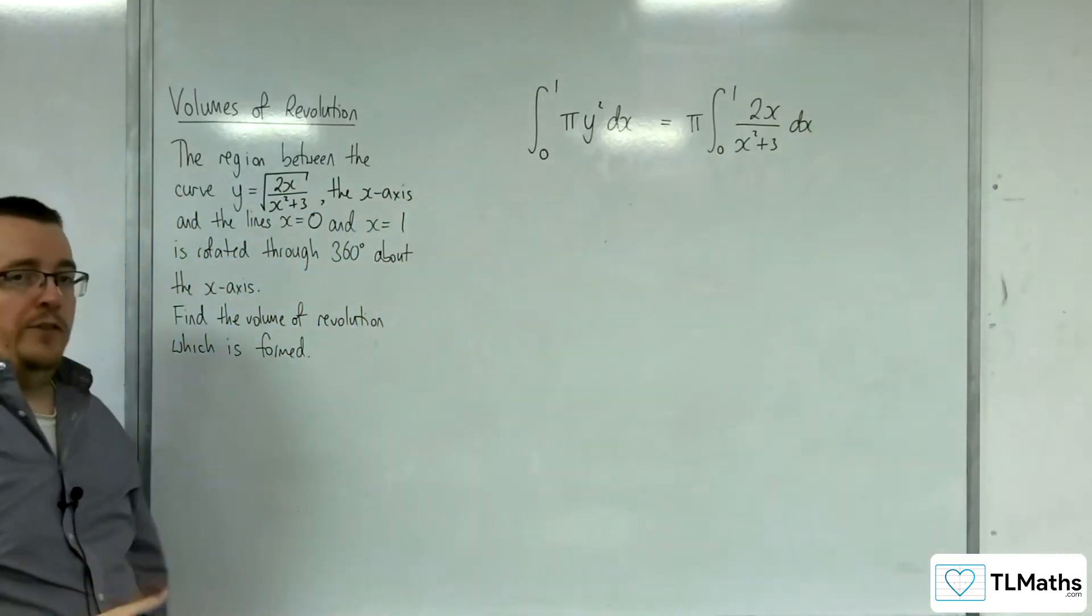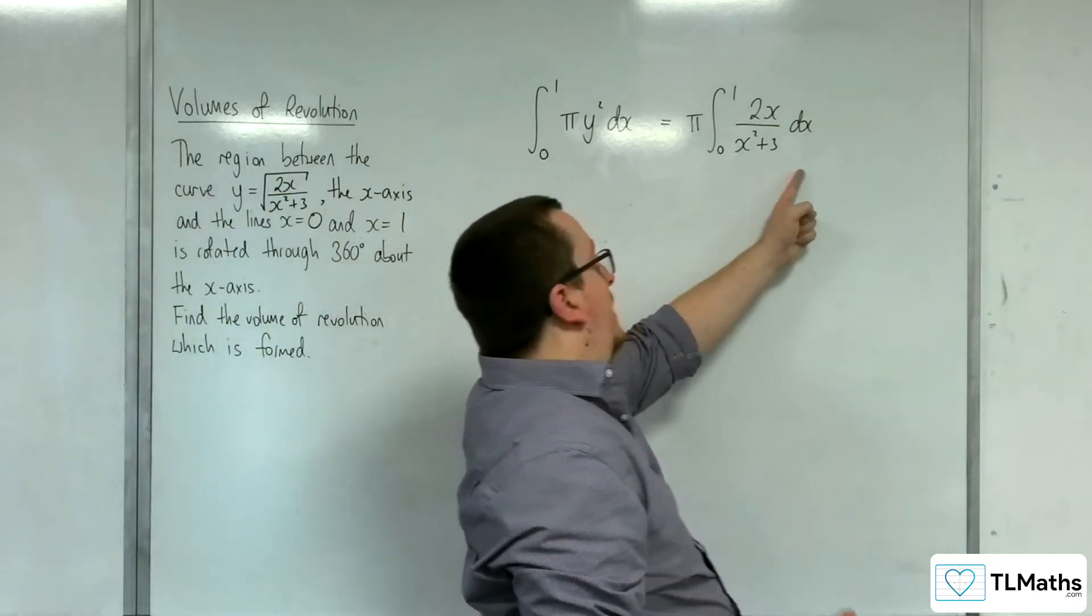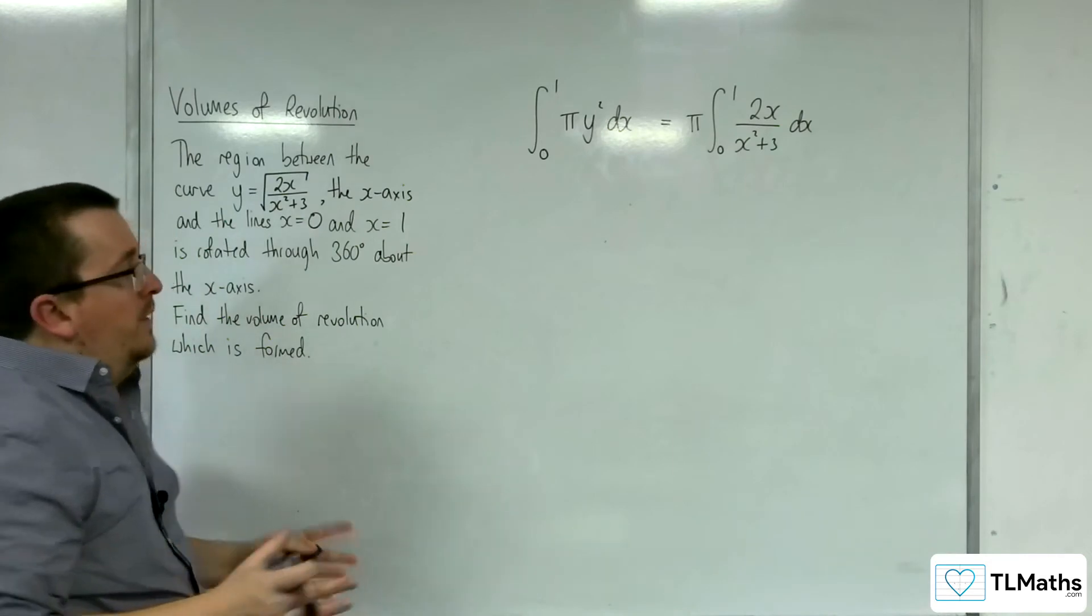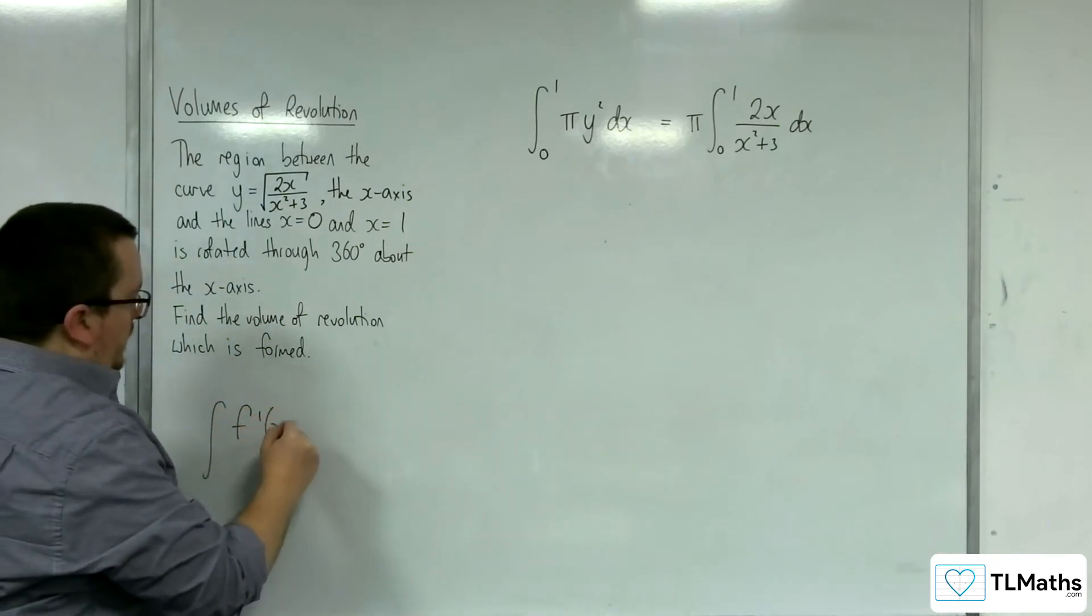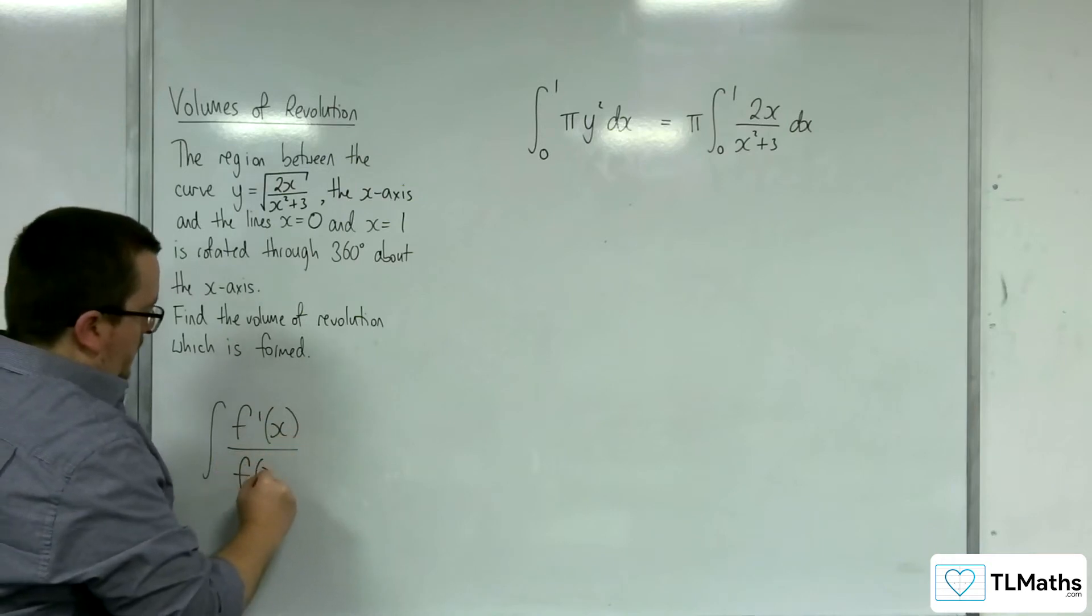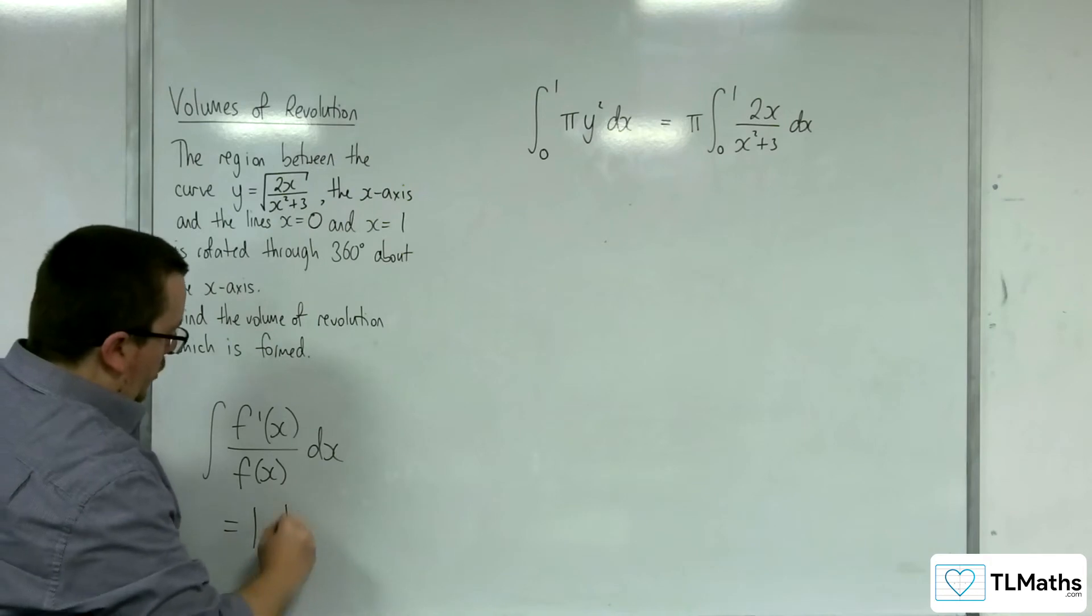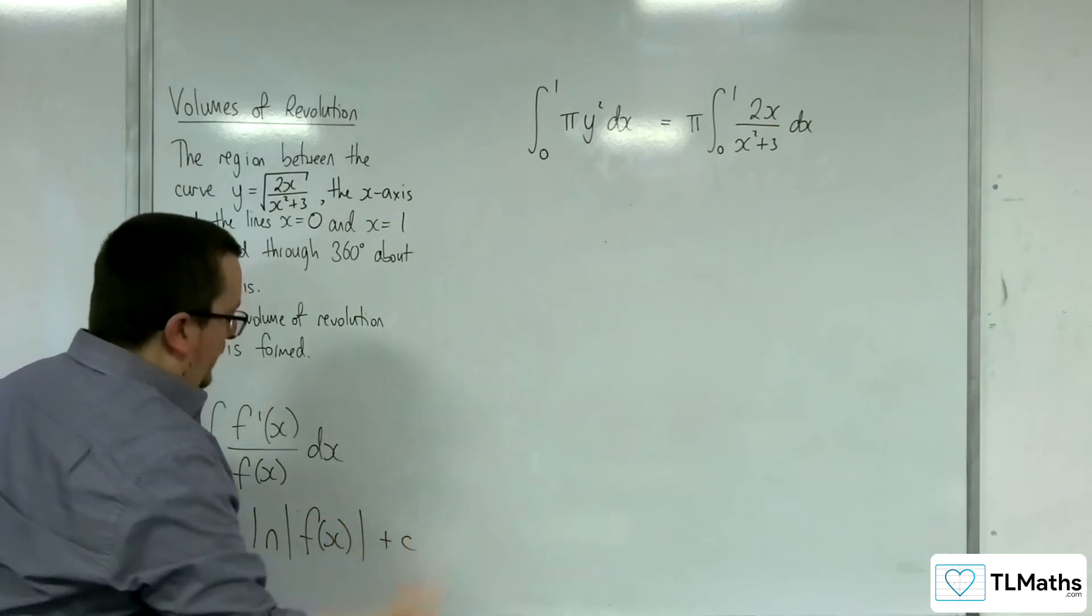Now, you could integrate this using integration by substitution, using u as the x squared plus 3, or alternatively, you're going to use the fact that the integral of f prime over f dx will integrate to the natural logarithm of modulus of f of x plus c.